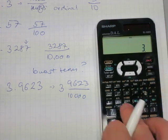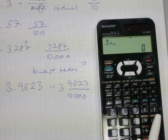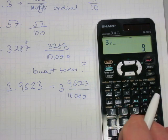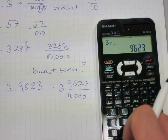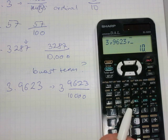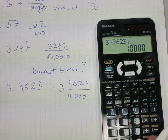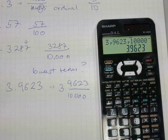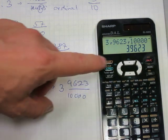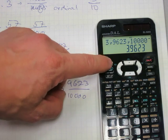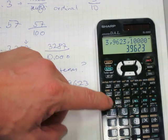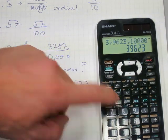So enter on your calculator, ABC button, 9623, ABC button, 10,000, equals. So we've got the same decimal. So that's a great start. Let's press ABC button again. It's still the same thing. Let's press second function and nothing changes there either.